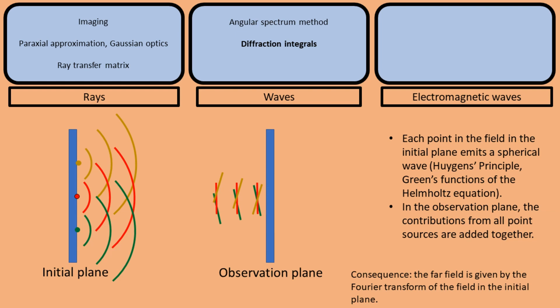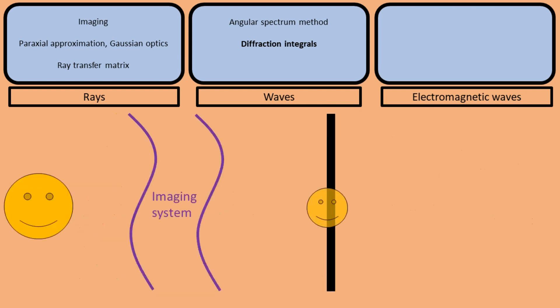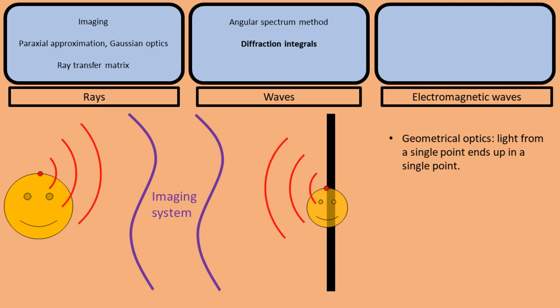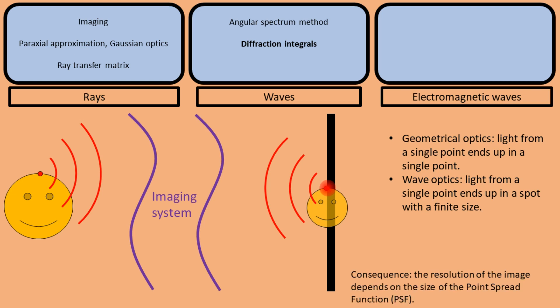This result is relevant in for example scattering experiments, where one tries to find information about a sample by illuminating it and recording the scattered far field. Another reason why diffraction integrals are useful is because they give insight in how objects are imaged. In the model of geometric optics, we said that an image is created when all the rays leaving from a single point end up in a single point. However, using diffraction integrals we find that due to the wave nature of light, we cannot focus the light from one point source in a single point. But rather, we focus it in a small spot with a finite size, which is called the point spread function. Because of this, the image will be a blurred version of the object, and the resolution of the image depends on the size of the point spread function.